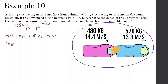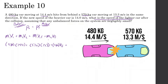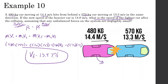Let's plug in the values. Mass of the first object is 480, velocity is 14.4. Mass of the second object is 570, velocity before collision is 13.3. After the collision, mass of the first object is 480 and we don't know the final velocity — that's what we're looking for. The heavier car has mass 570 and is going 14 meters per second after the collision. So: 480 × 14.4 + 570 × 13.3 = 480 × V1_final + 570 × 14. Subtracting 570 × 14 from both sides and dividing by 480, we get 13.57 meters per second.